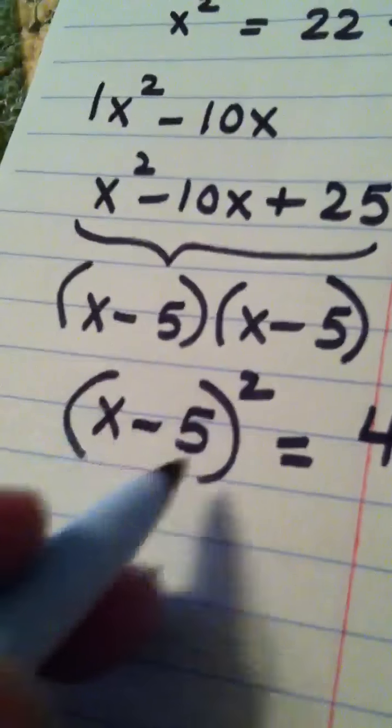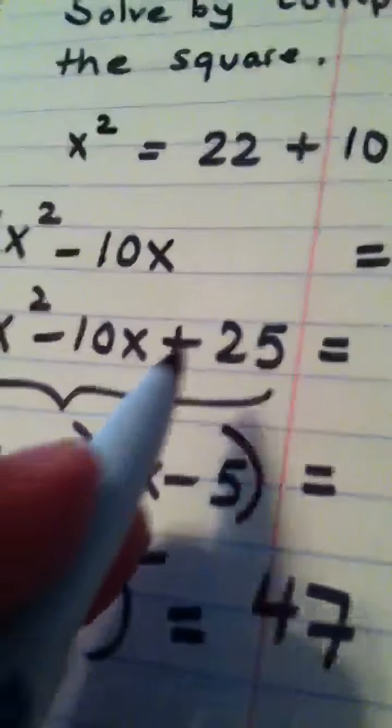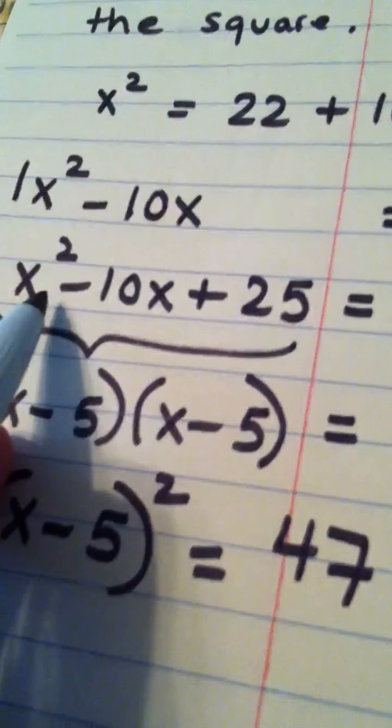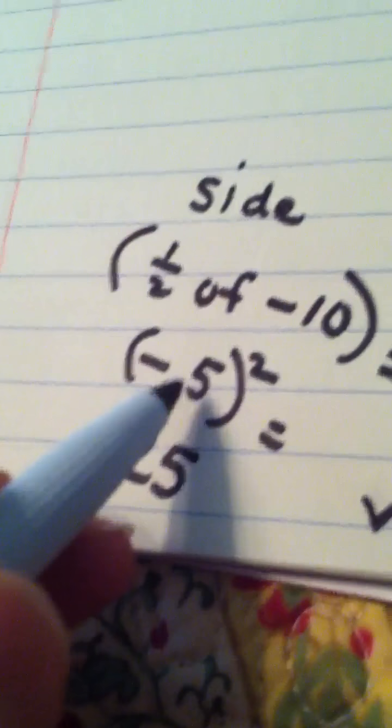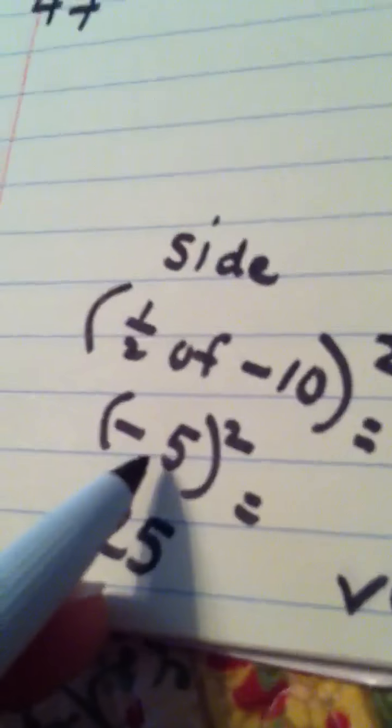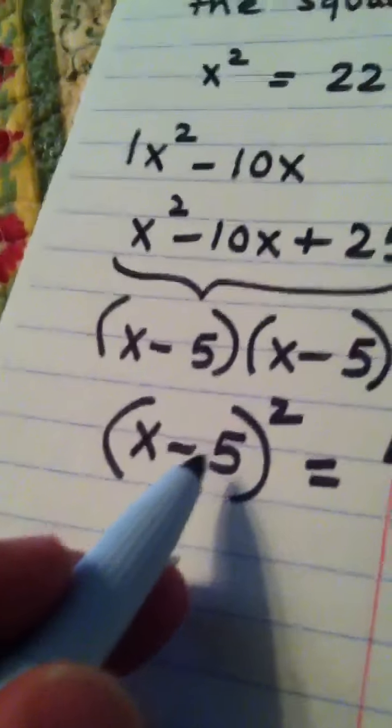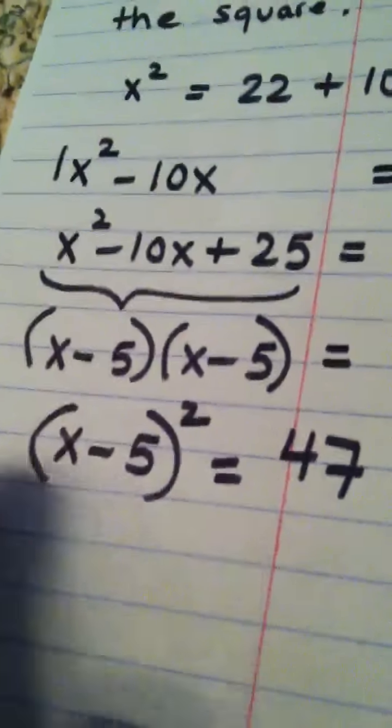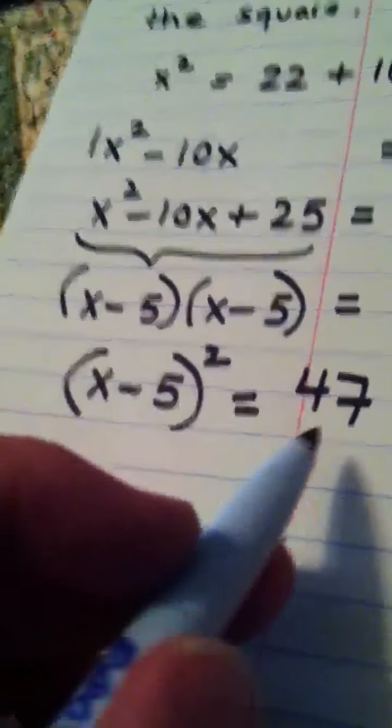Now one thing I've always taught you in class but I'm going to repeat it: whenever you're factoring this trinomial, the number that's going to work is always the number that was inside the parentheses here before you squared. Half of negative 10 was negative 5, and that was the number that worked here. And that's always how it's going to be.